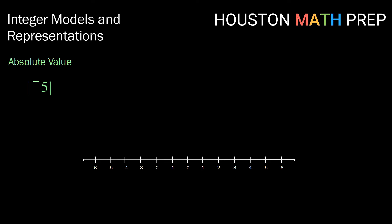All right, let's see if we can get this absolute value of negative 5 modeled. So we're going to start at zero and we're going to count how many units from zero to negative 5. One, two, three, four, five. So that would mean that the absolute value of negative 5 is 5.